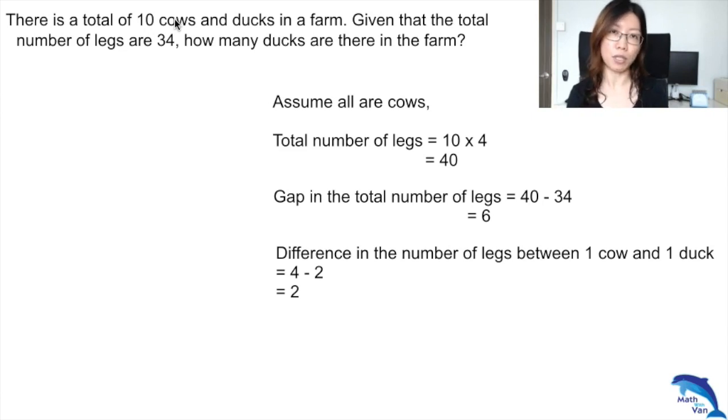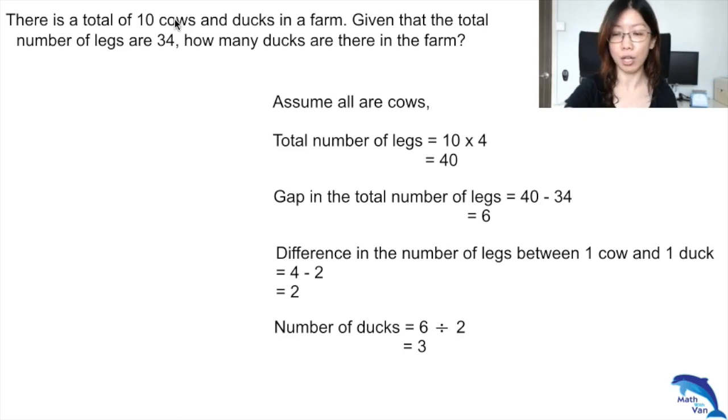Using the number sentence 6 divided by 2 equals 3, you need to do it 3 times, so there are 3 ducks in the farm. Best of all, you have ample time to check. So 3 ducks times 2 plus 7 cows times 4 gives you 34.